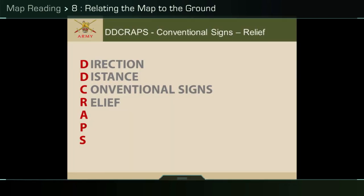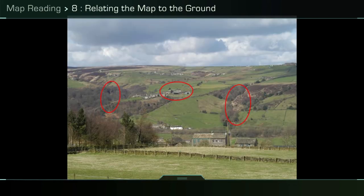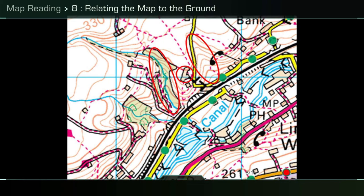Relief: identifying the patterns of relief features on a map enables you to recognize the shape of the feature on the ground. For example, the prominent re-entrant circled to the right in the picture is clearly marked with contours on the map.